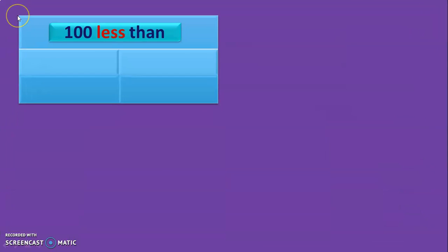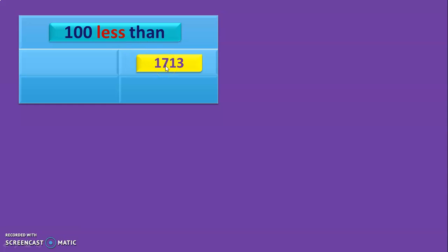To begin with 100 less than — the number given is 1,713. What is the digit in the 100s place? In the 100s place we have 7. There will be no change in the 1s and 10s place. The keyword is 'less' so we subtract 1 from the digit in the 100s place — 7 minus 1 is 6. So the answer will be 1,613.